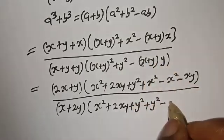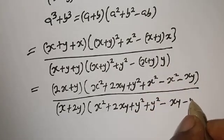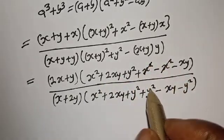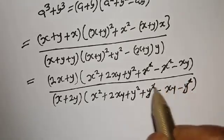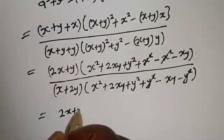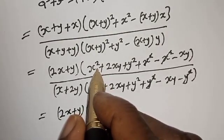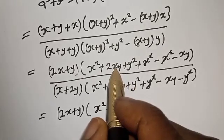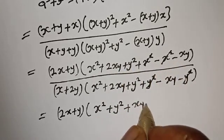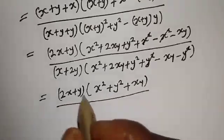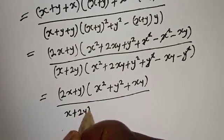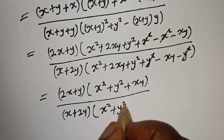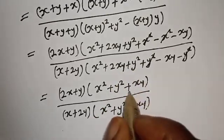From here we can see that this s squared cancels with s squared in the denominator, and this y squared cancels with y squared. This simplifies to: 2s plus y, multiplied by s squared plus y squared plus 2sy minus sy, over s plus 2y, multiplied by s squared plus y squared plus 2sy minus sy.